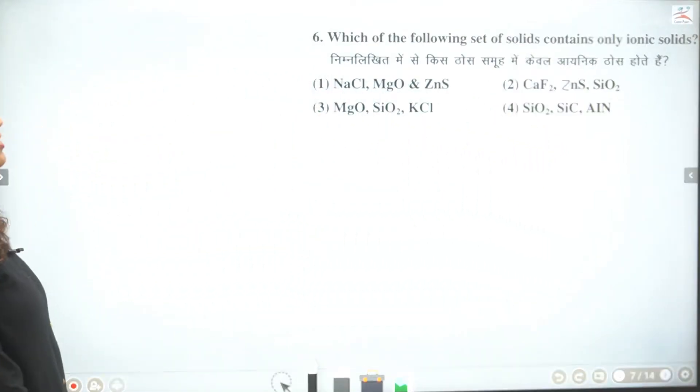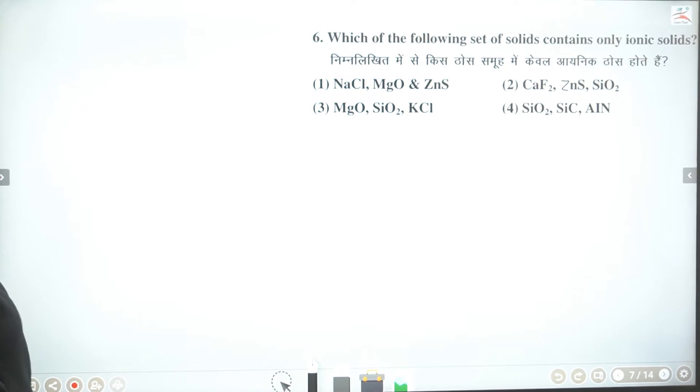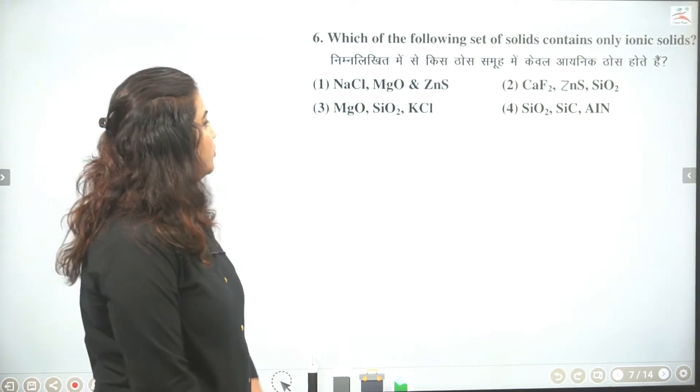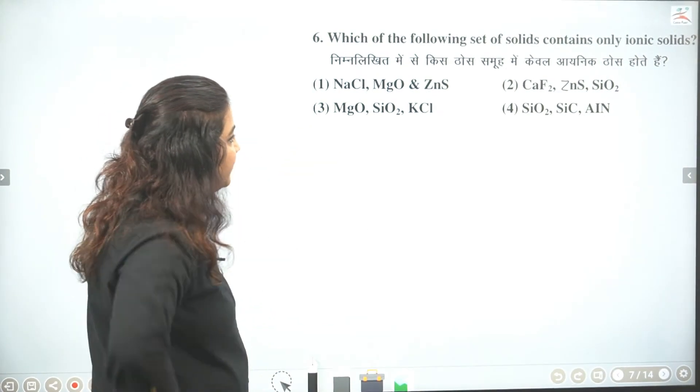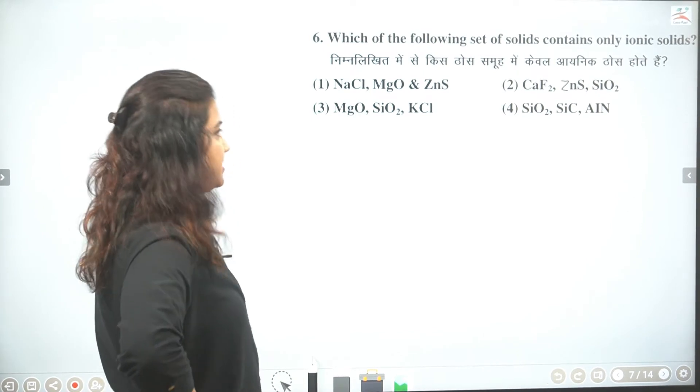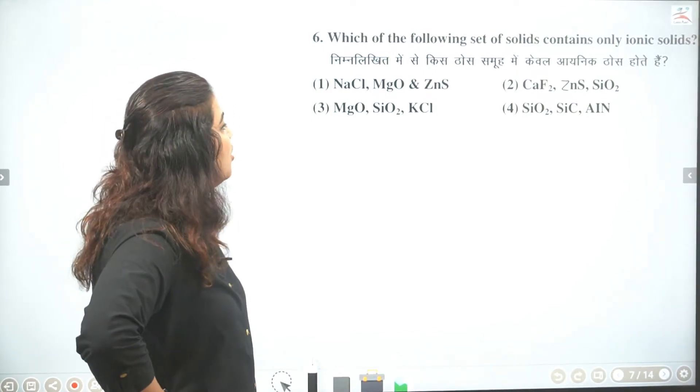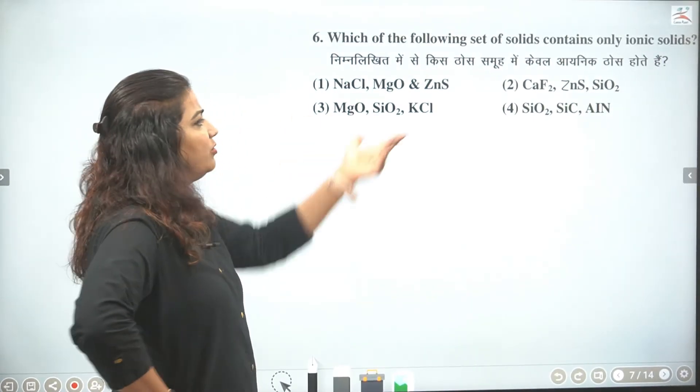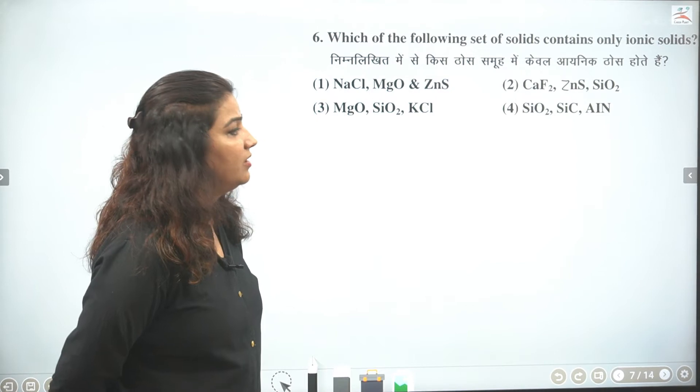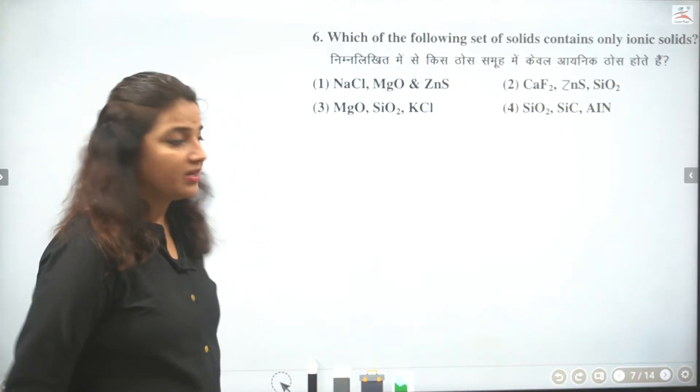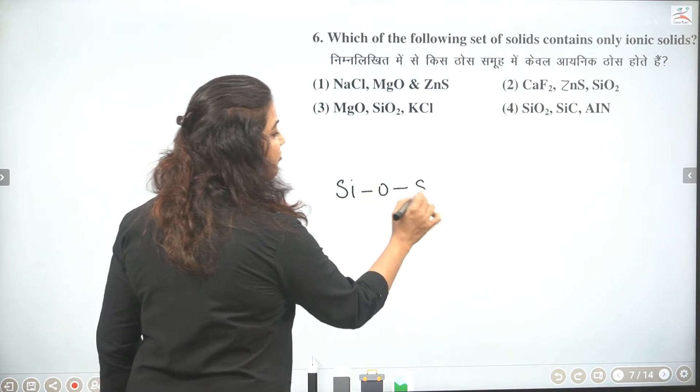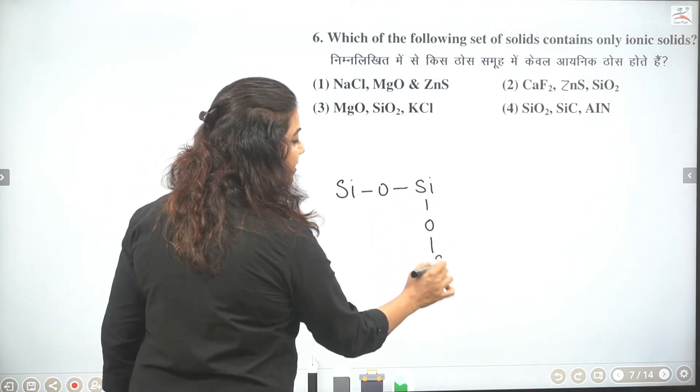Next we have which of the following set of solids contain only ionic solid. Toh aapko batao sirf ionic hai na. Sirf ions hone chahiye. Toh baccho NaCl, thik hai ions hai. MgO, ZnS, thik hai. Mg+2 O-2 aur Zn+2 sulfur-2. Saare ionic hai. Koi dikkat nahi hai. Ek metal do lo ek non-metal do lo. Ab aapka le lo second kya hai. Toh baccho second mein toh silica hai. Ab silica aapne structure banaya hoga. Silica is an example of covalent 3D network solid.